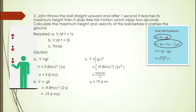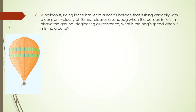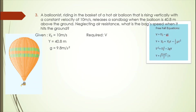Example 3: A balloonist riding in the basket of a hot air balloon rising with a constant velocity of 10 meters per second releases a sandbag when the balloon is above the ground. Neglecting air resistance, what is the bag's speed when it hits the ground? Given: initial velocity of 10 meters per second, height of 40.8 meters, and constant acceleration due to gravity of 9.8 m/s². We are to solve for the velocity of the sandbag.